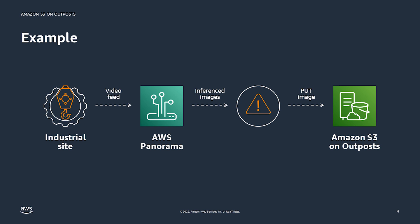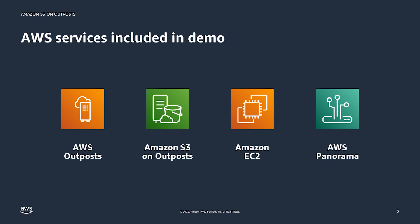We're going to analyze a sample town center video from the published samples available in GitHub using the AWS Panorama Simulator SDK. Note, we won't use a Panorama device, but it would follow the same deployment path from the device to the Outpost. The services we'll use today include AWS Outposts, S3 on Outpost, AWS Panorama, the Panorama SDK Simulator, and an EC2 instance running on the Outpost.